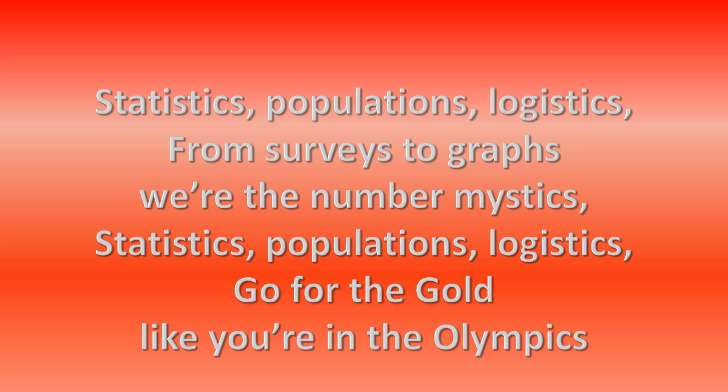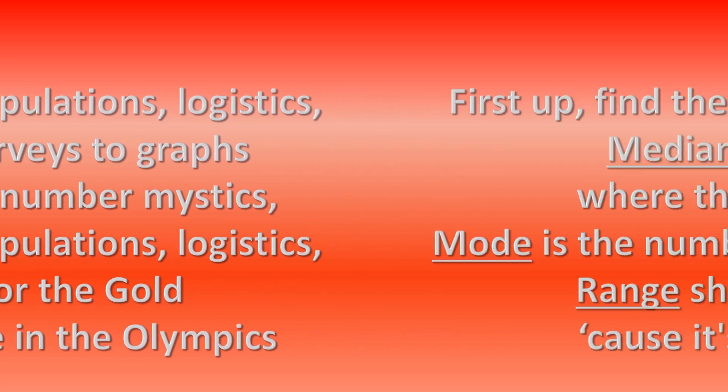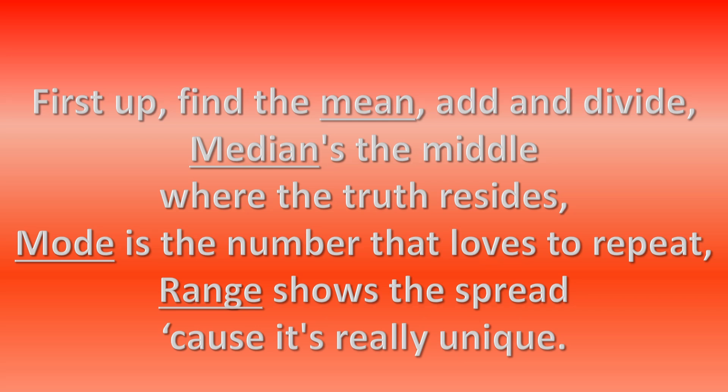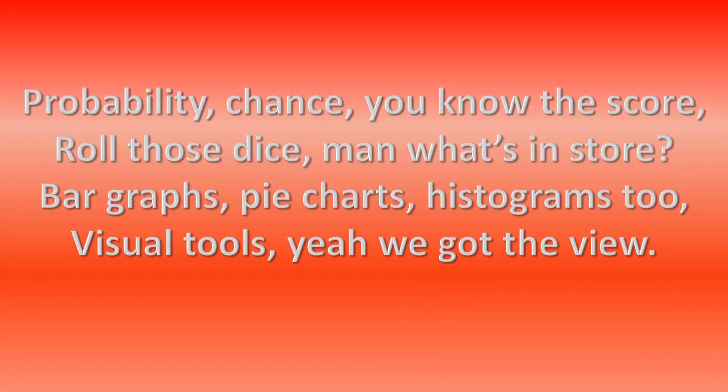Statistics, populations, logistics, go for the gold like you're in the Olympics. First up, find the mean, add and divide. Median's the middle where the truth resides. Mode is the number that loves to repeat. Range shows the spread 'cause it's really unique. Probability, chance that you know the score. Roll those dice man, what's in store?